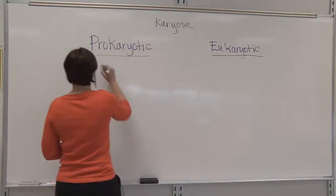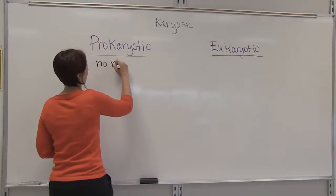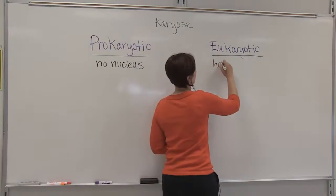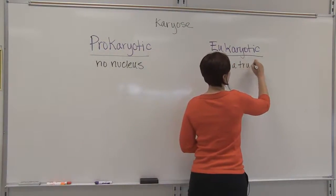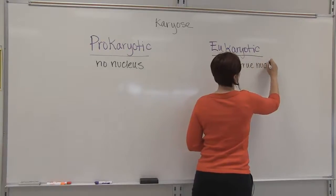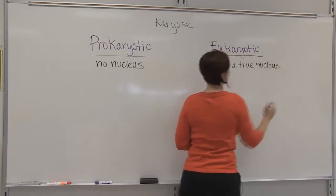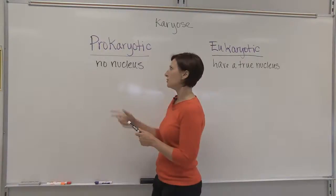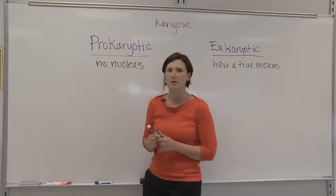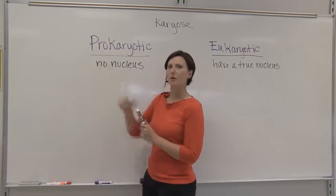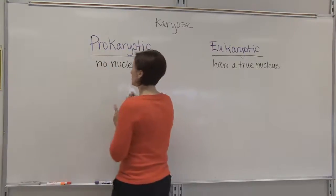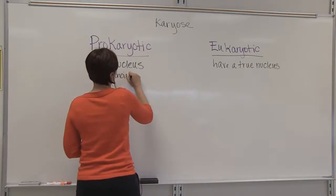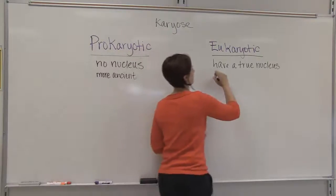So one of the major differences is that prokaryotic cells have no nucleus, and eukaryotic cells have a true nucleus. Another major difference that can be defined using the origins of the word is that pro, since it means before, prokaryotic cells are more ancient. They're older than eukaryotic cells, which are more contemporary.